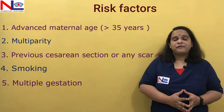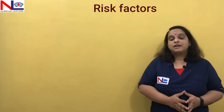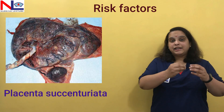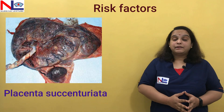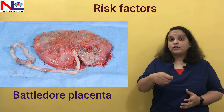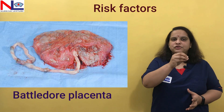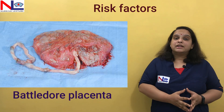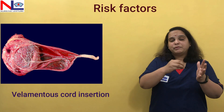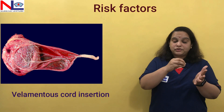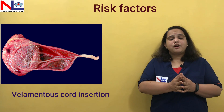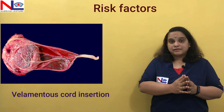With such risk factors, placenta and cord abnormalities may also occur. There may be a placenta succenturiata, where an extra lobe forms slightly away from the main portion of the placenta. There may also be cord abnormalities like battledore placenta, where the cord attaches at the margin rather than the center, or velamentous insertion, where the vessels and cord insert from slightly away from the main placental mass.